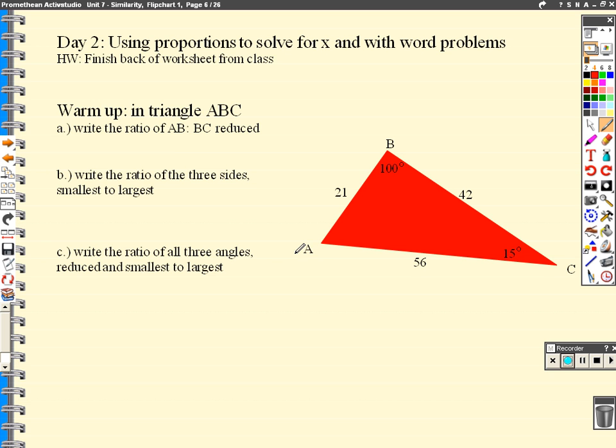Alright guys, here we are on Thursday. We're going to learn how to use those proportions and ratios that we learned yesterday from class. We're going on to a warm up right here, just looking at this triangle. We're going to write the ratio of AB to BC, which are the sides of the triangle.